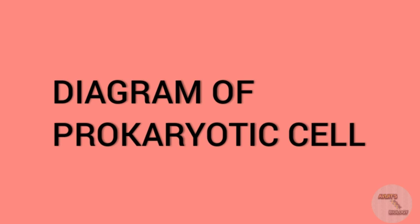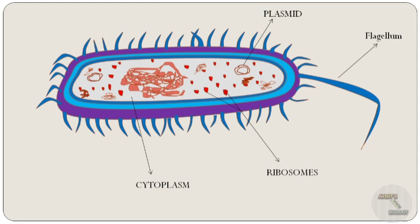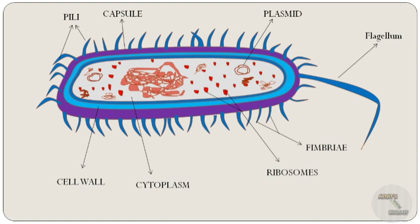Now let's look at the diagram of a prokaryotic cell. This is the flagellum of the cell. This is the plasmid. This is the cytoplasm, and here are the ribosomes. These are pili, and this is the capsule of the cell. The smaller hair-like structures are the fimbriae. This is the cell wall which protects the cell, and this is the plasma membrane. Finally, this is the DNA or nucleoid region which stores all genetic material of the cell.